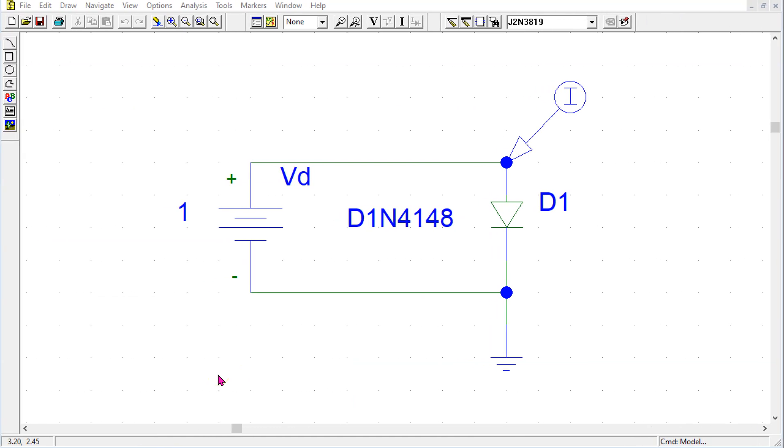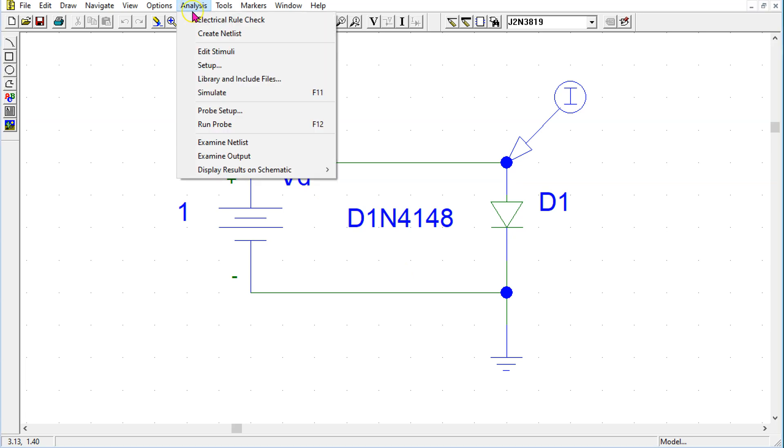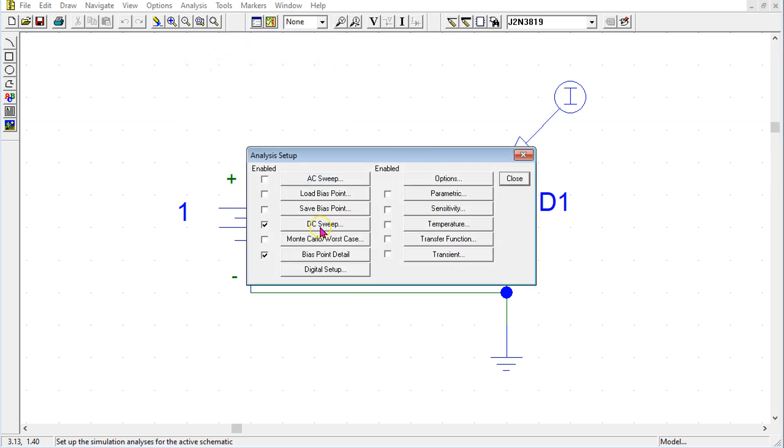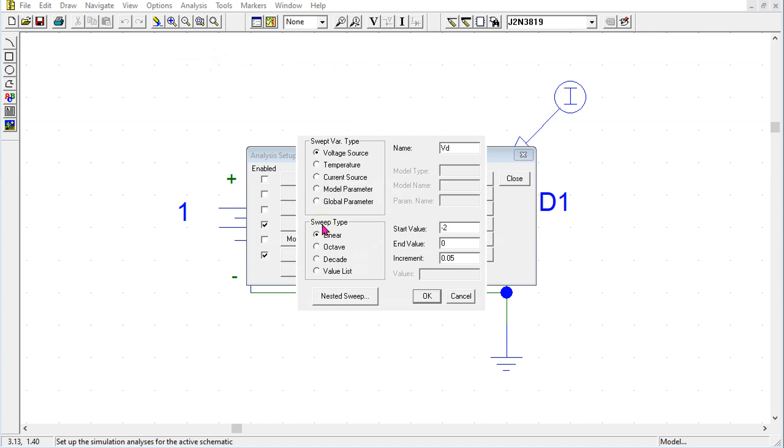This same approach works in PSpice as well. This is the circuit setup in PSpice for simulating the diode characteristics. We can go to Analysis, Setup, and Enable DC sweep. By setting an appropriate DC sweep, we can simulate the characteristics in the ON or the OFF region. The settings shown here are for the OFF region.